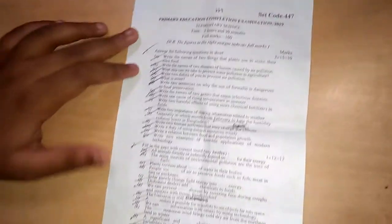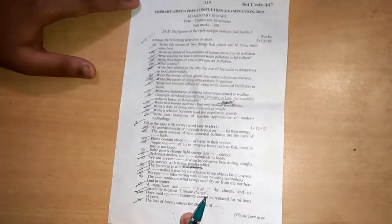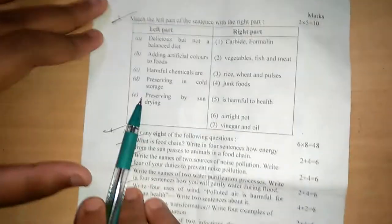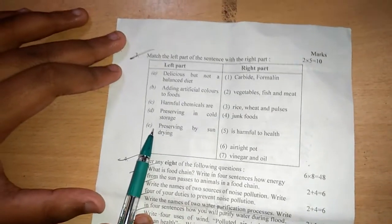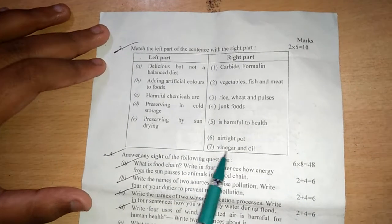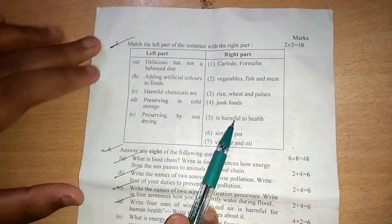Now I am showing you the question again. Number three, this is matching. And there are five matching. We have to match it with the right part. But there are seven. We have to find the correct one.